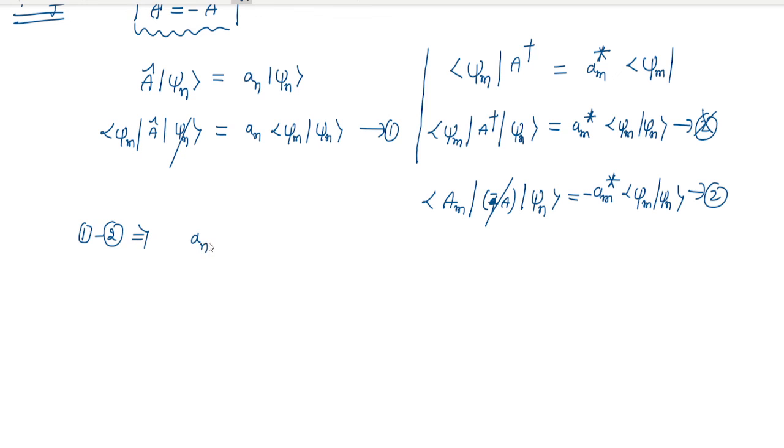So these two are cancelled because â dagger equals minus â. These two are similar terms which is why I cancel these two. Remaining these two: aₙ minus into minus plus, so aₙ + aₘ* times the inner product ⟨ψₘ|ψₙ⟩ remaining.